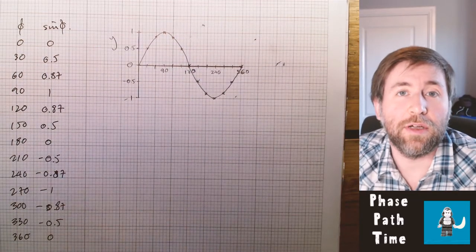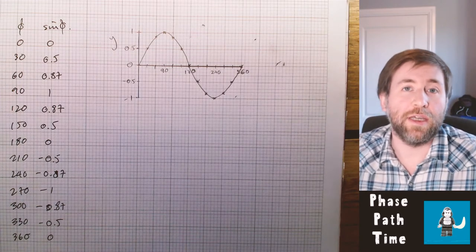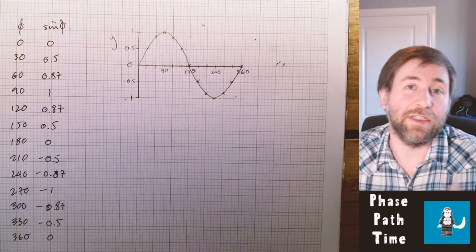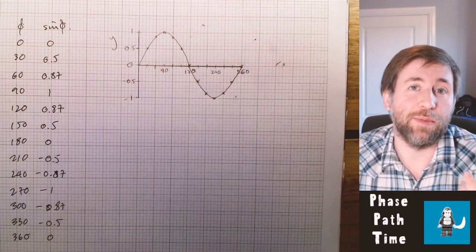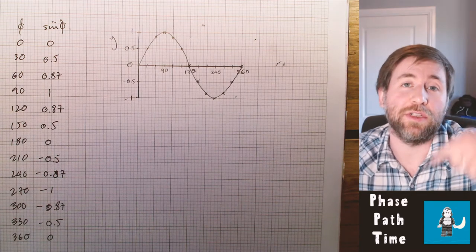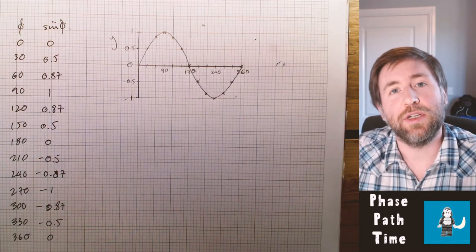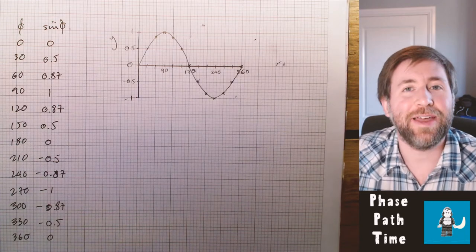So what I have there is what we call a sine curve and that is a graph of y versus phi. That is displacement in the y dimension. So if you can imagine a wave having particles oscillating in the vertical direction versus angle versus phase angle.